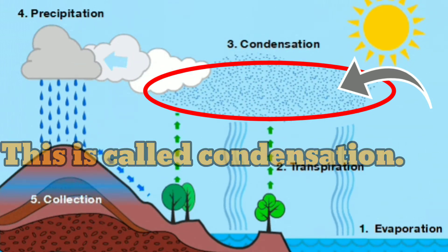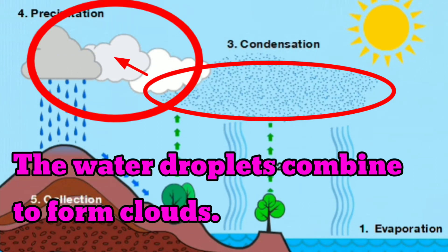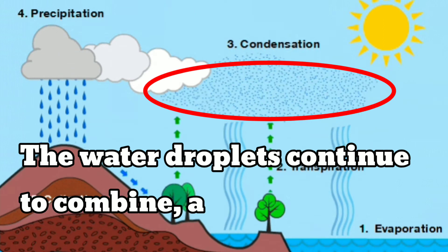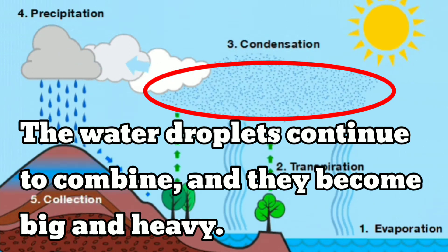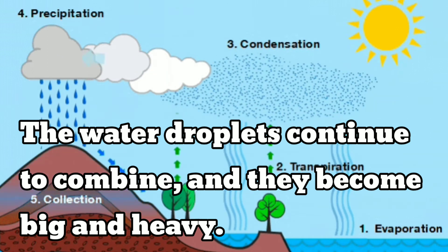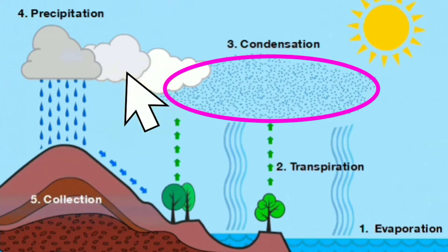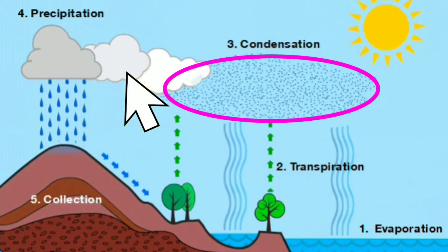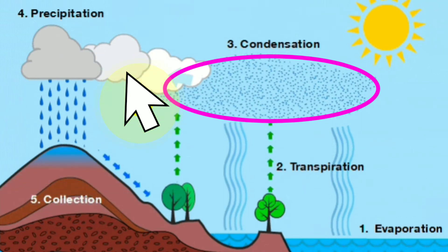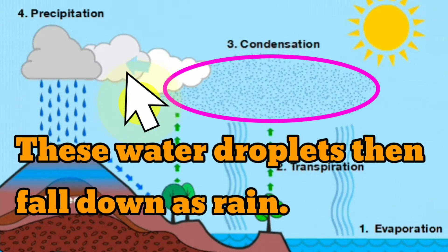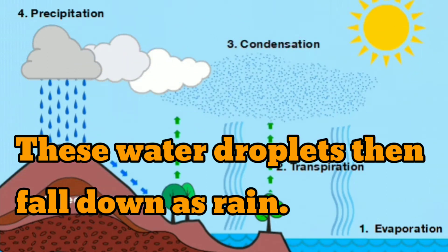The water droplets combine to form clouds. The water droplets continue to combine and they become big and heavy. Niraviyagamari, thodarindu onru sereandu, alaviyal periathagin. These water droplets then fall down as rain. This is called precipitation.